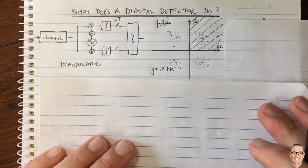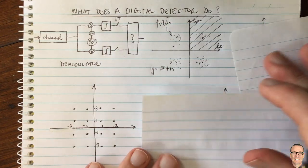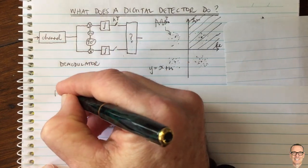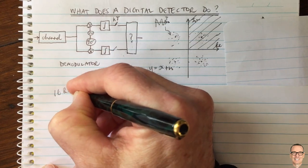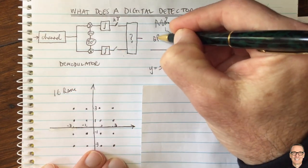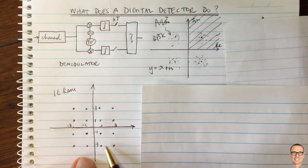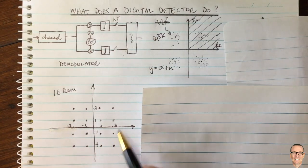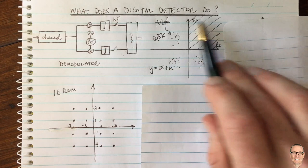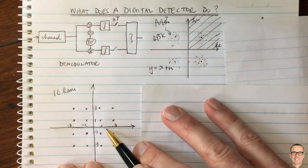What about more complicated scenarios? Let's look at 16 QAM. In 16 QAM there are more points, so the situation is exactly the same as QPSK but more complicated because there are more points. We're still looking at the additive white Gaussian noise channel, so there will still be clouds around each of these points.